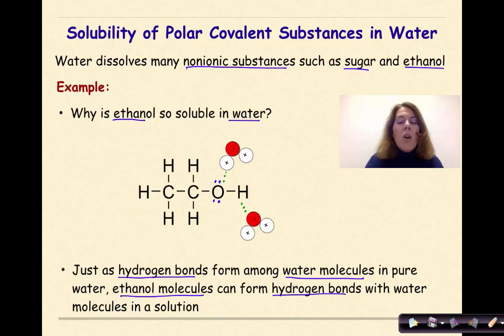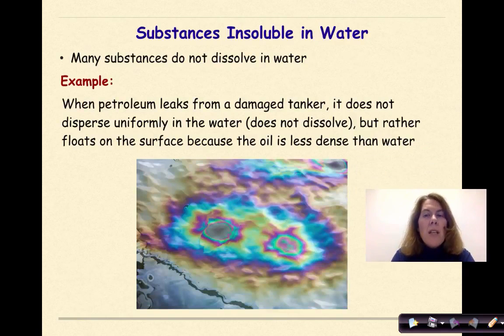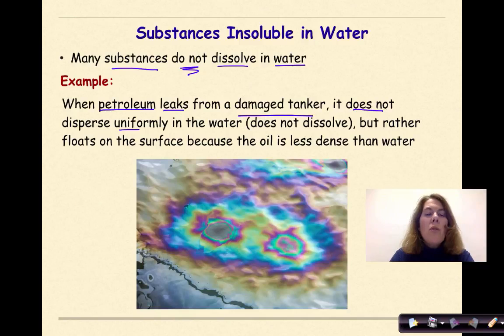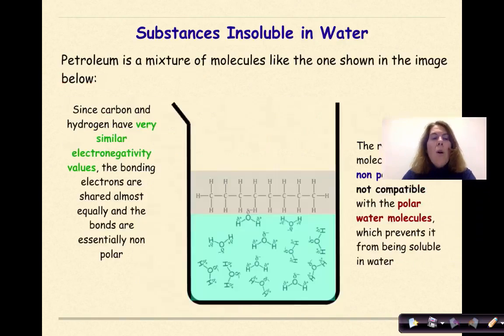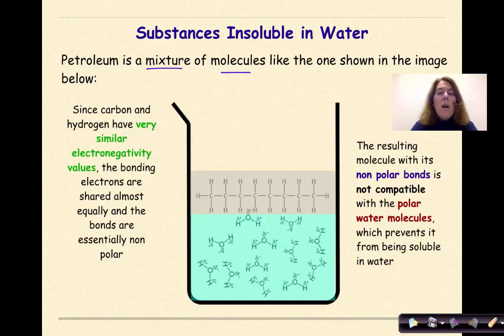Substances that are insoluble in water: Many substances do not dissolve in water. For example, when petroleum leaks from a damaged tanker, it does not disperse uniformly in the water. In other words, it doesn't dissolve but rather floats on the surface because the oil is less dense than the water. Petroleum is a mixture of molecules like the one shown in the image below.